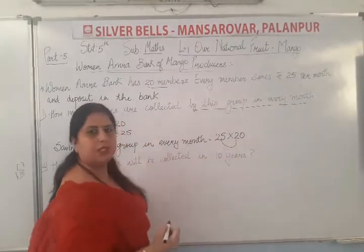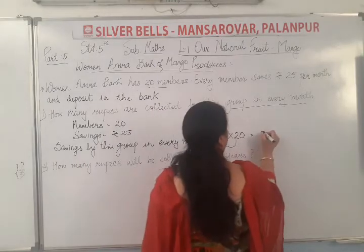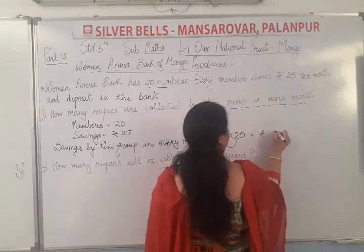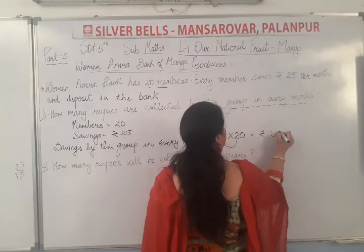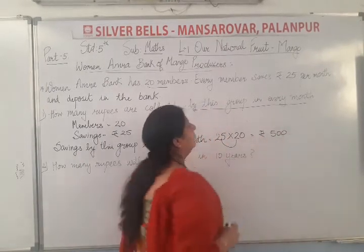25 twos are 50. And one more zero. So the monthly collection is Rs.500.